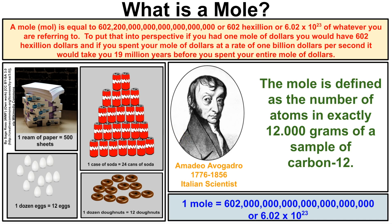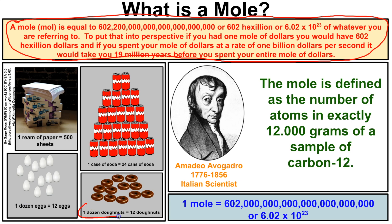So what is a mole and how does it work? A mole is a unit of measurement that we use in chemistry — in fact, in a first year chemistry course you're going to be talking a lot about it. A mole is equal to 602 hexillion, or 6.02 times 10 to the 23rd, of whatever it is you're talking about. For example, if we talk about a dozen donuts, that means I have 12 donuts.